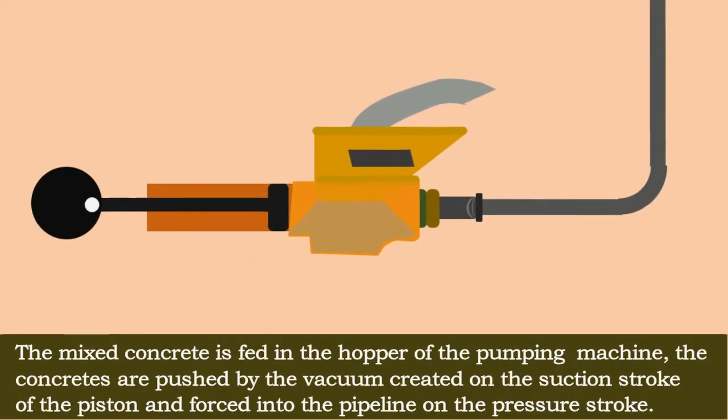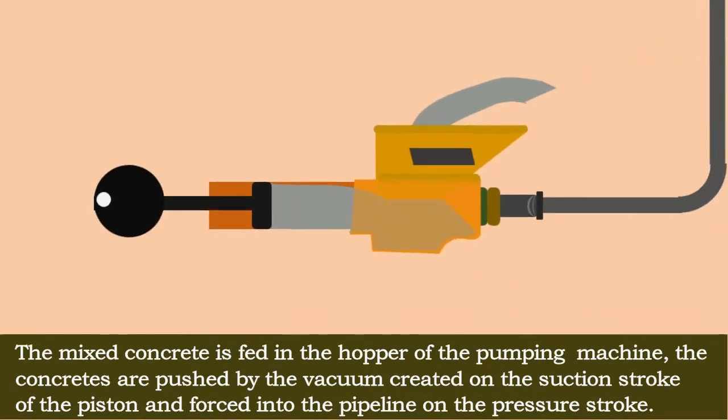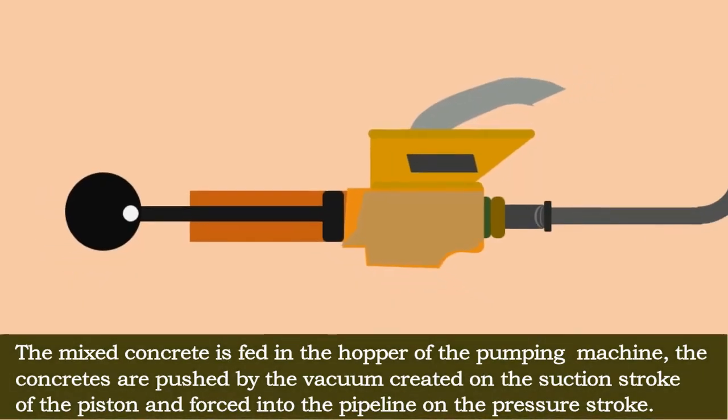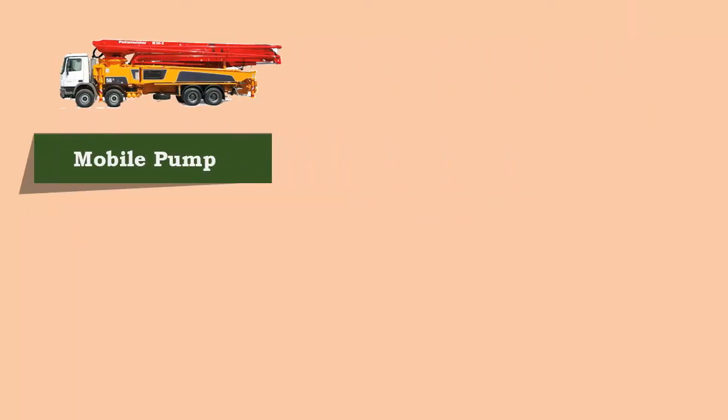The concretes are pushed by the vacuum created on the suction stroke of the piston and forced into the pipeline on the pressure stroke. The common types of pumps used for concreting are mobile pump trailer, static pump, and screw door motor pump.